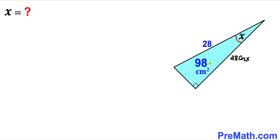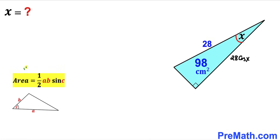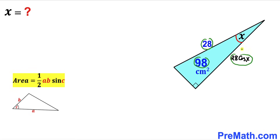Let's focus on this blue right triangle and recall the area of a triangle formula: Area equals one half times a times b times sine of angle C. In this diagram we have side lengths a and b with angle C in between. In our case our area is 98 centimeters square, our side lengths are 28 and 28 times cosine of x, and our angle is x.